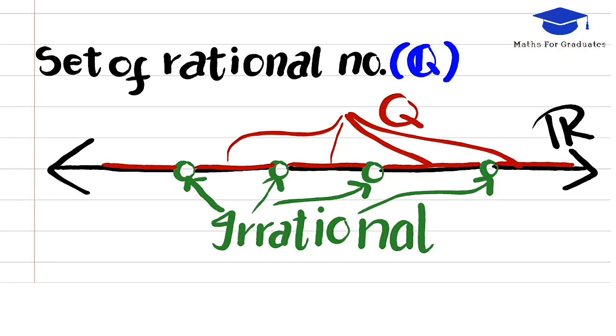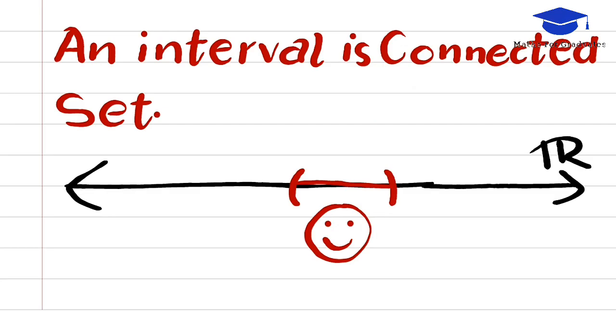The set of rational numbers is also a disconnected set. Now more importantly, an example of a connected set is an interval.